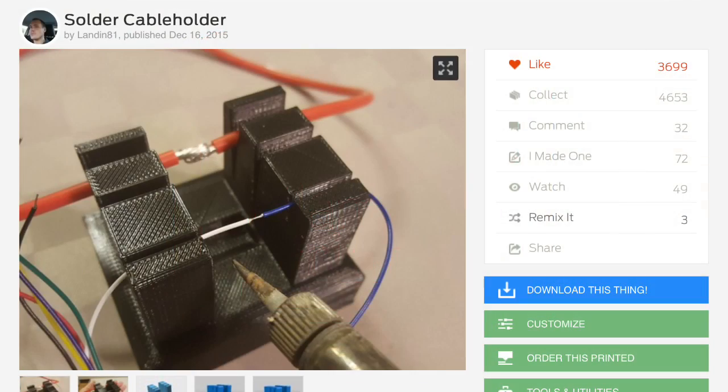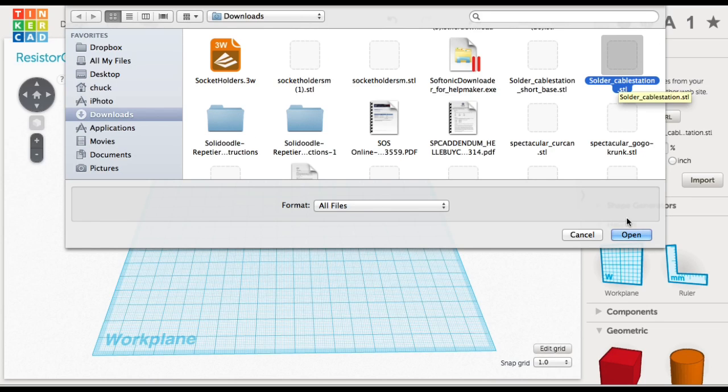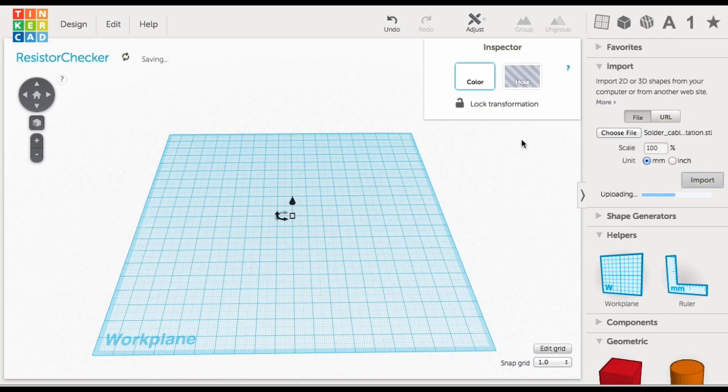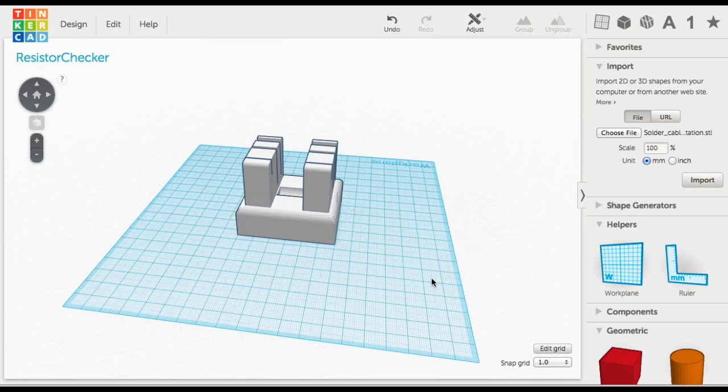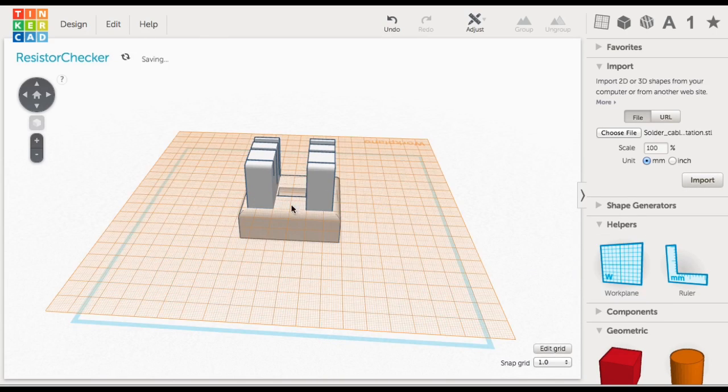And here's the design I started with. It's a solder cable holder by Thingiverse user Landon81. This is actually a really easy design to make. So the first thing I did was import the original STL file. I just found the file, clicked import, and there I had it.